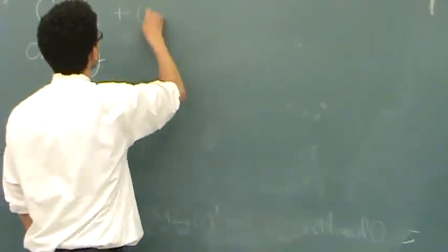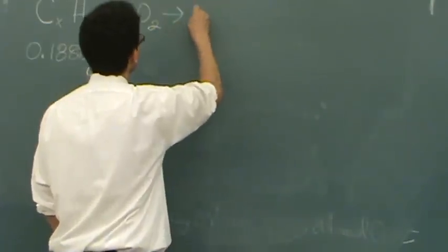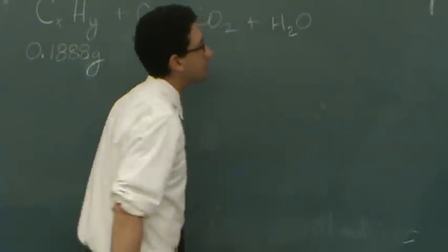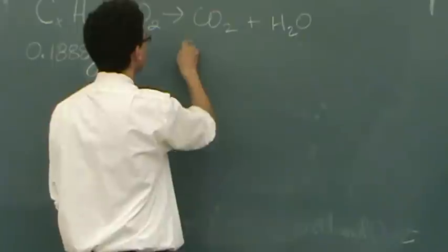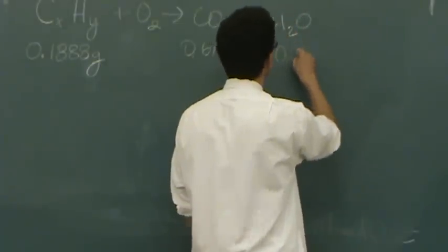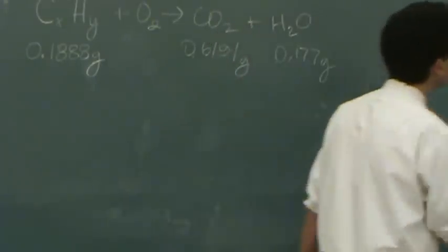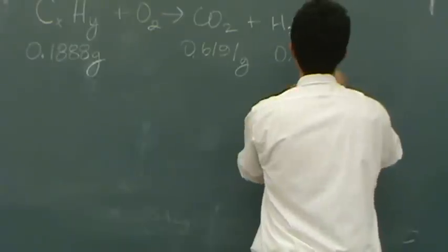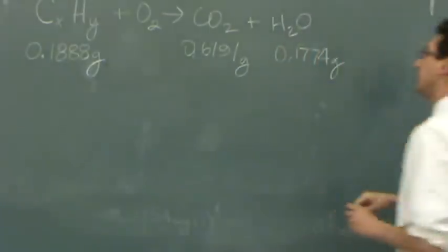This undergoes combustion. Combustion, you always add O2, and you go to CO2 and water. You don't need to balance it, but we do want to write down the masses of each. This is 0.6191 grams, and water is 0.1774 grams.